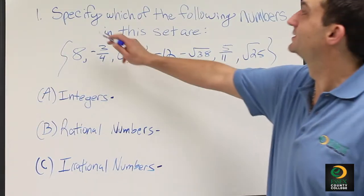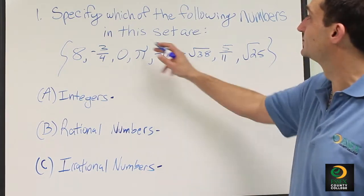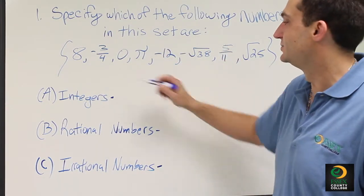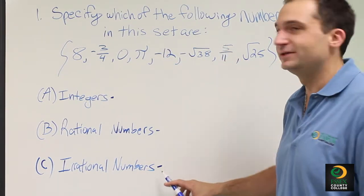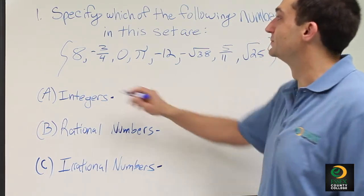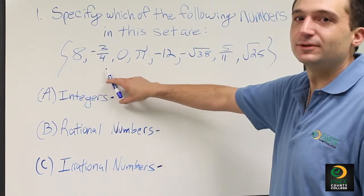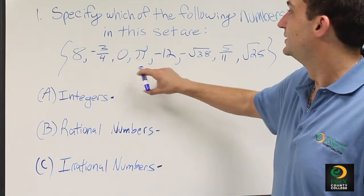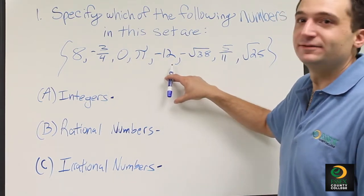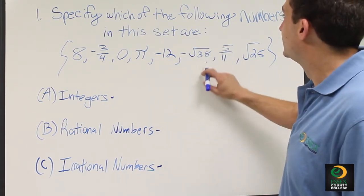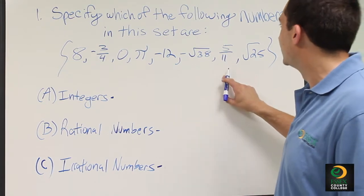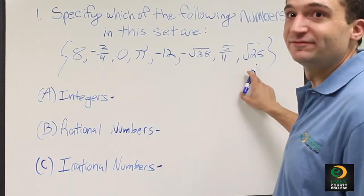The first problem states, specify which of the following numbers in this set are integers, rational numbers, and irrational numbers. The numbers are 8, negative 3 quarters, 0, pi, negative 12, the negative square root of 38, 5 elevenths, and the square root of 25.